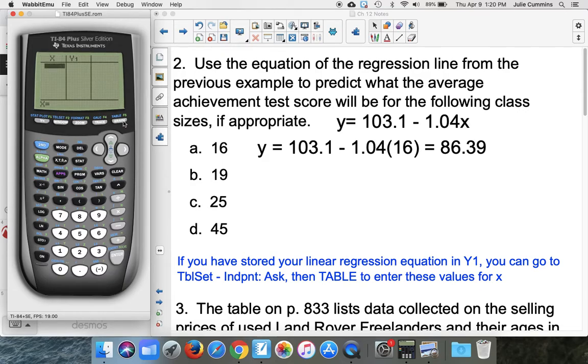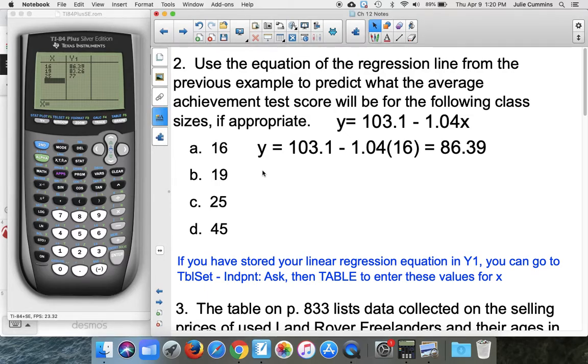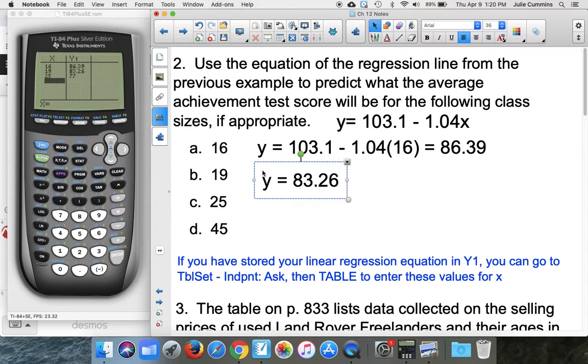So go back to your table, and now you just type in what you want. So I want you to evaluate it at 16. Notice that's the same thing we got. I want you to evaluate at 19, and we get 83.26. I want you to evaluate at 25, and it will. Okay, so that's the advantage of storing things, is that we can get these great values without having to plug in ourselves and without having to use rounded values.